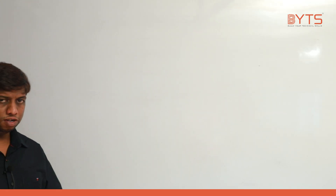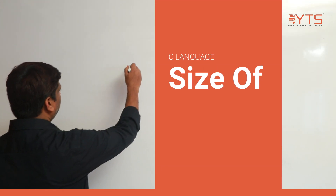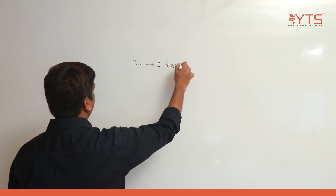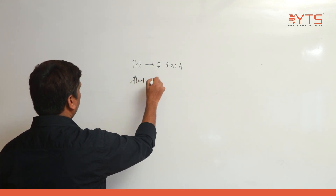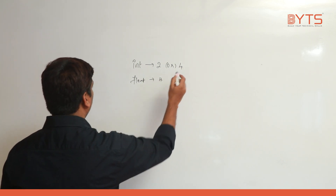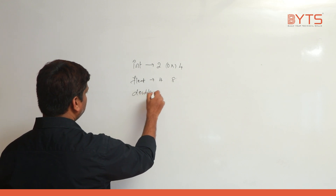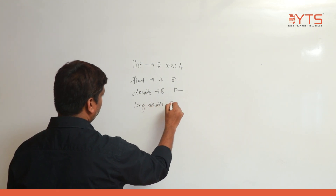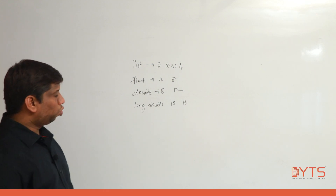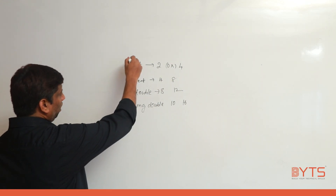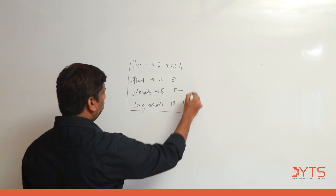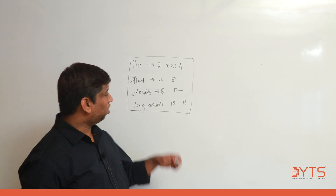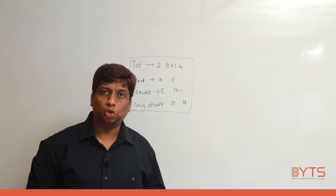One important concept to understand: data type sizes vary by machine. Integer size could be 2 or 4 bytes. Float is 4 bytes, but on some machines it could be 8. Double is 8, and some systems give 12. Long double is 10, and some systems give 16. The conclusion is that the size of int, float, double, and long double will vary from machine to machine.